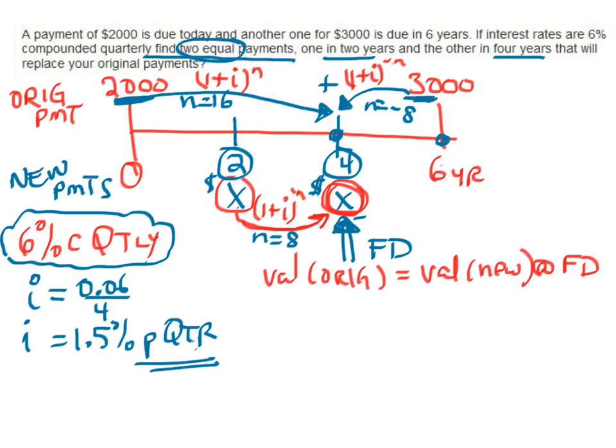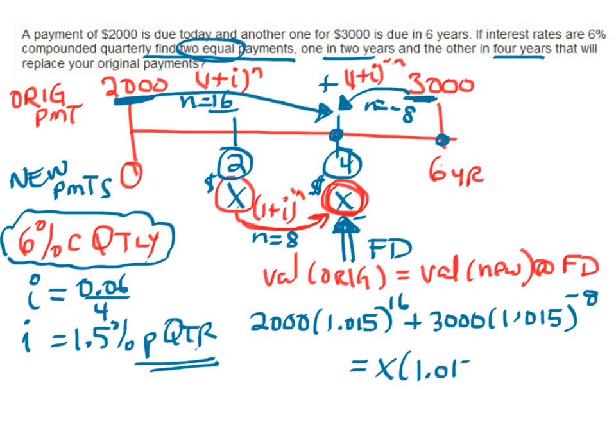We're ready to come up with our equation. $2,000 multiplied by (1.015) to the 16th power, plus $3,000 multiplied by (1.015) to the negative 8th power equals X multiplied by (1.015) to the 8th power plus X. Notice this one doesn't move, so I don't multiply it by any compound interest factor. I've got a very simple equation. Let's solve it.